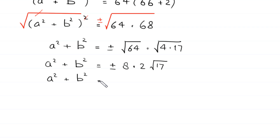Taking the square root, where the square root of 64 times 68 simplifies as 8 times 2 times root 17, we get a squared plus b squared equals plus or minus 16 times root 17.